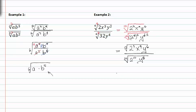Now let's put it all over one radical. We'll have one index and the fraction inside, now that the indexes match. So we have two to the third, x to the ninth, y to the sixth over two to the tenth, y to the eighth. Now let's reduce the common factors. Two to the third will reduce with two to the tenth and I'll be left with two to the seventh in the denominator.